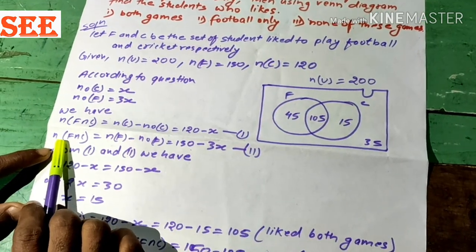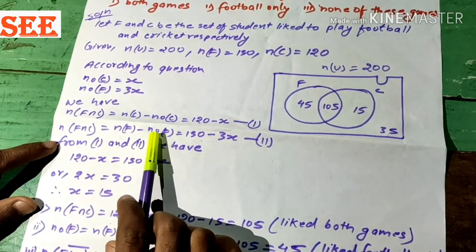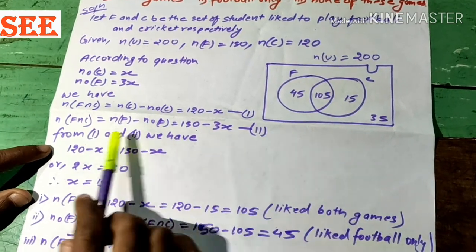Again, n(F ∩ C) = n(F) - n(only F) = 150 - 3x. Let it be equation 2. From 1 and 2, we have 120 - x = 150 - 3x.